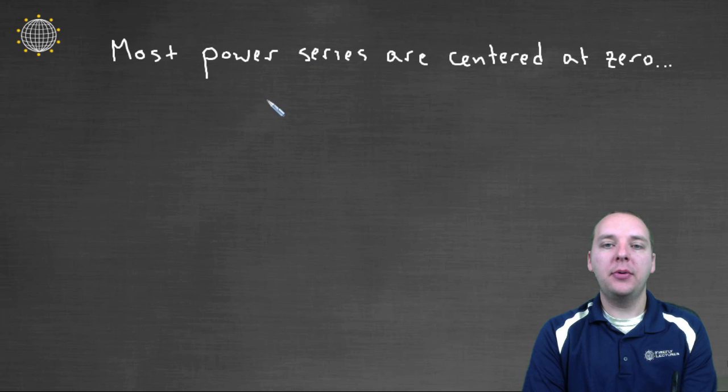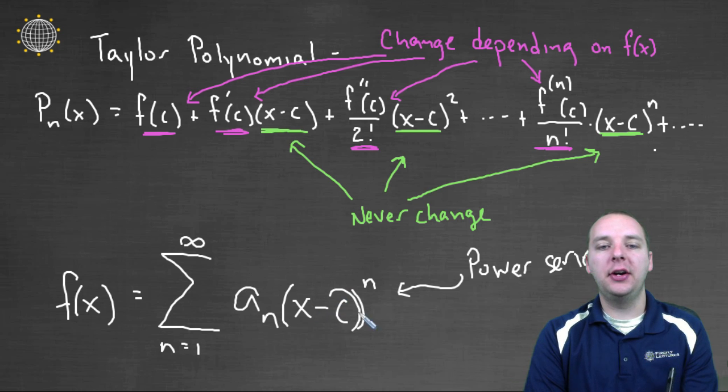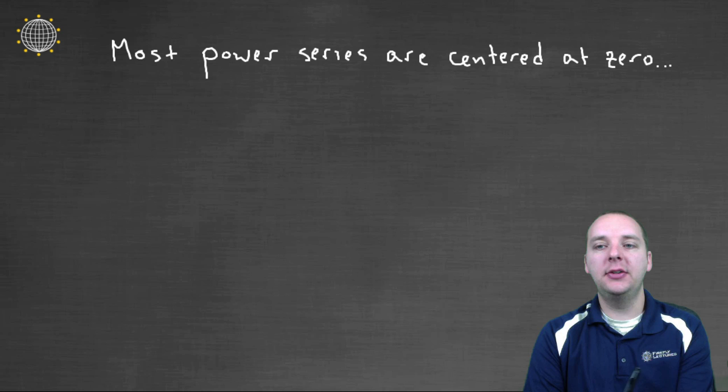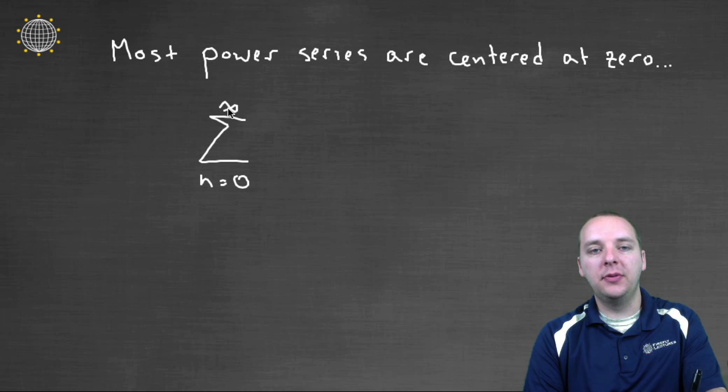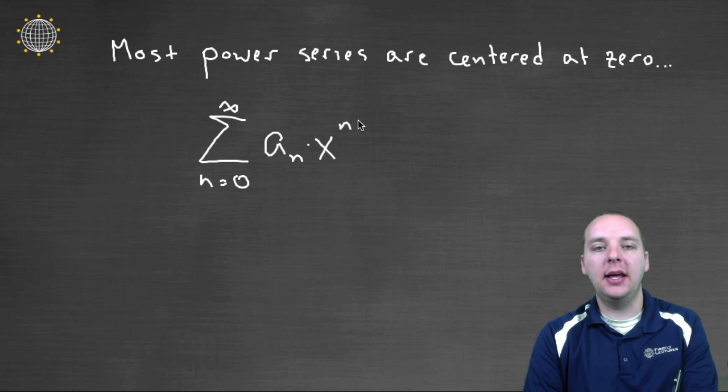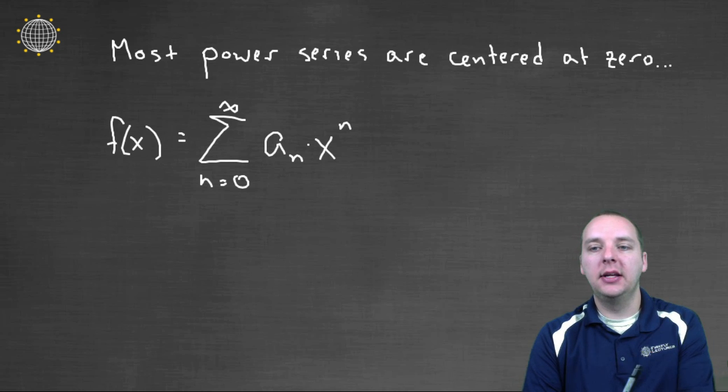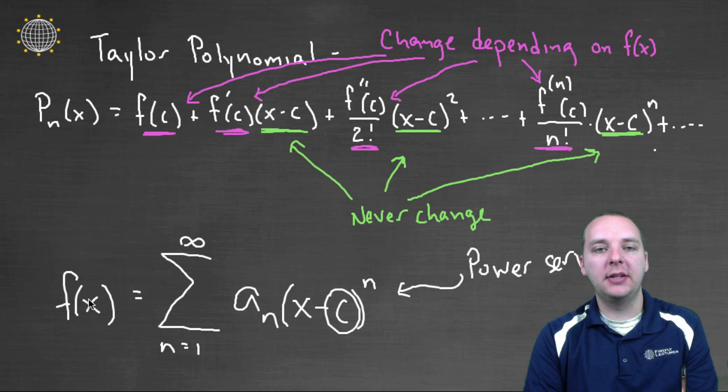And so, anyway, this is just an idea of what a power series looks like. Now, in practice, most power series are centered at zero, not at a generic C, which is good. That makes our algebra a lot easier. For example, if it's centered at zero, then we can actually write your infinite series as the sum n equals, actually, zero to infinity of a sub n times x to the n. And so this will wind up being a function of x.